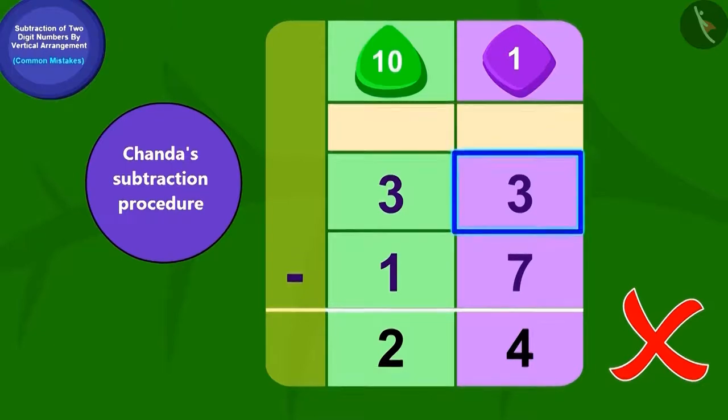While subtracting, Chanda subtracted three ones of 33 from seven ones of 17. Is this the correct procedure? Here, while subtracting, we should subtract the digit of the smaller number from the digit of the larger number. Did Chanda do this? Chanda subtracted the bigger number from the smaller number. That's why Chanda's answer is wrong.